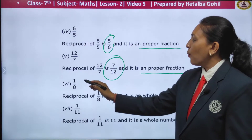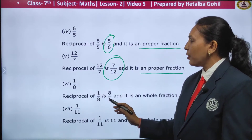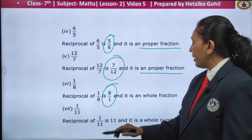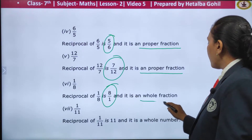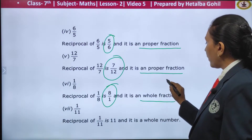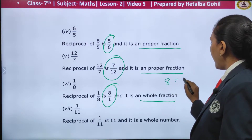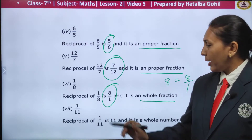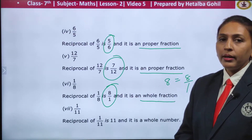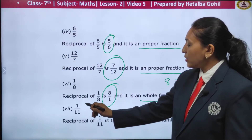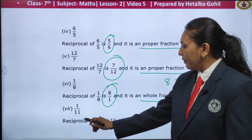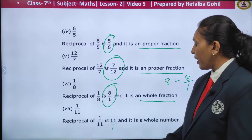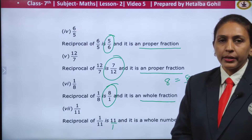Next one: 1 upon 8 — the reciprocal of 1 upon 8 is 8 upon 1, and it is a whole number. Next one: 1 upon 11 — the reciprocal is 11 or 11 upon 1, which is a whole number.